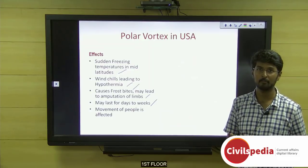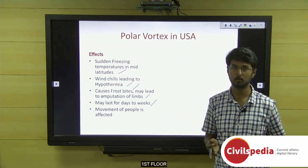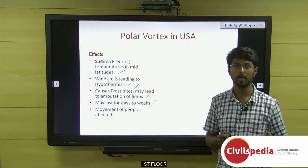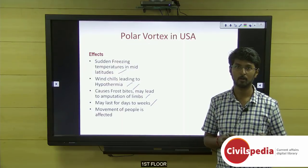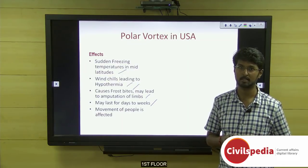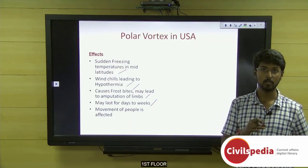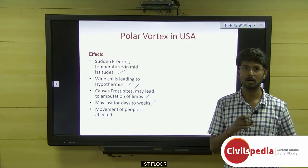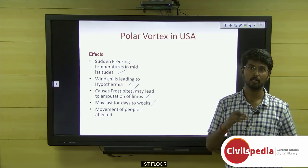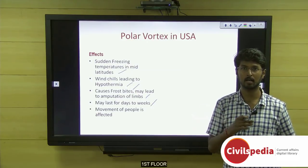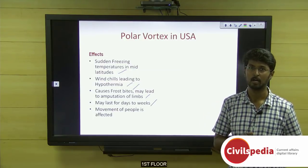The polar vortex leads to frostbites, amputation, and lasts for days to weeks, ultimately affecting people's movement — entire businesses and transport come to a standstill. The O'Hare International Airport in Chicago had around 1,000 flight movements disrupted. A similar polar vortex occurred in 2015 as well, and global warming is considered one reason for the frequent polar vortexes occurring in the northern hemisphere.